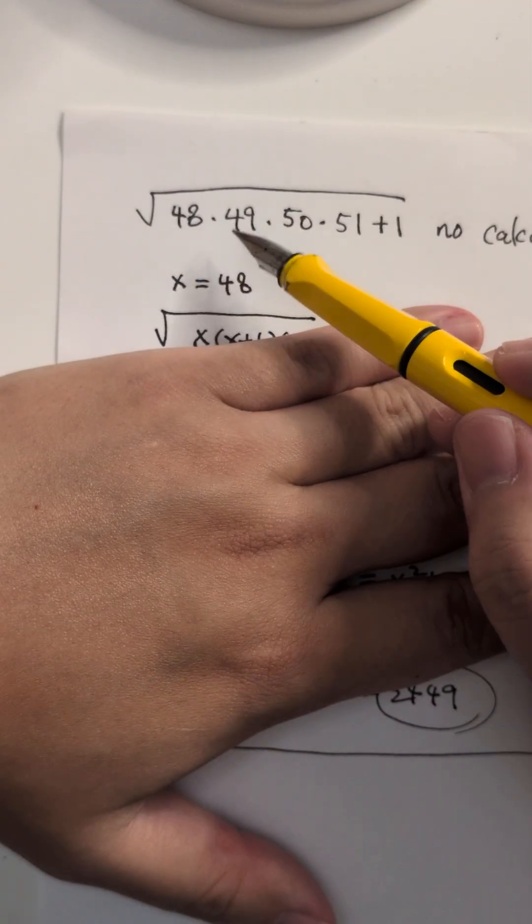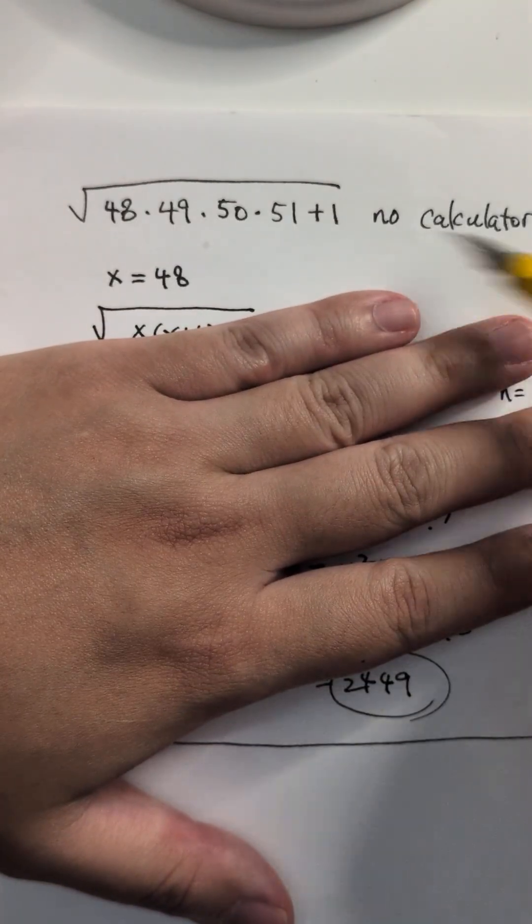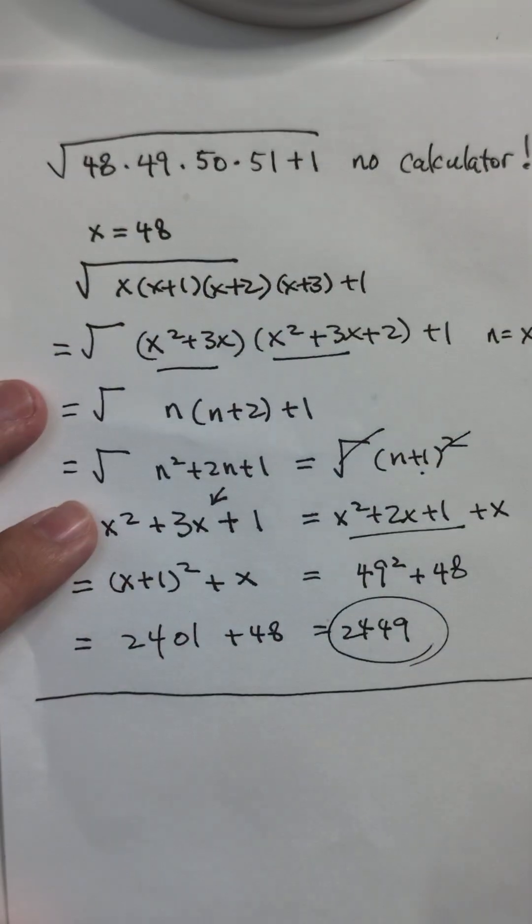So, the same problem: 48 times 49 times 50 times 51 plus 1, no calculator. Square root and no calculator, right?